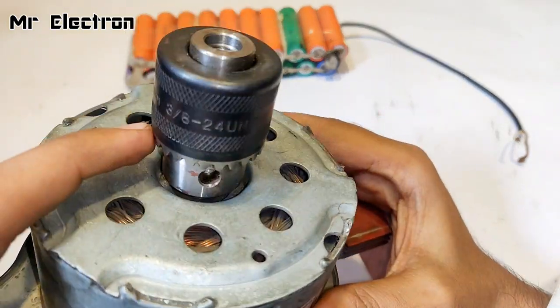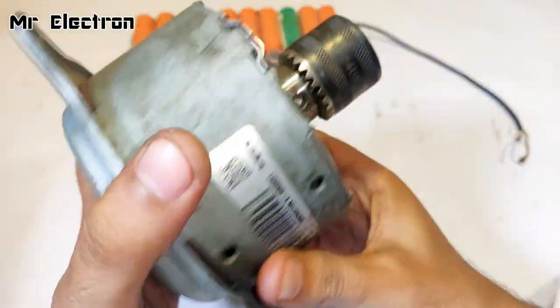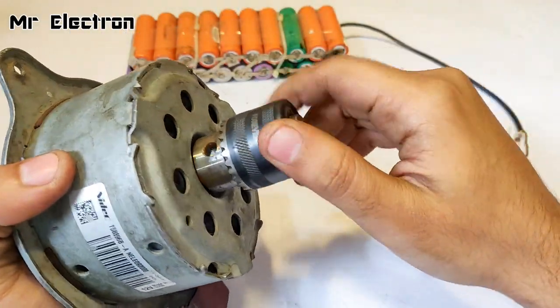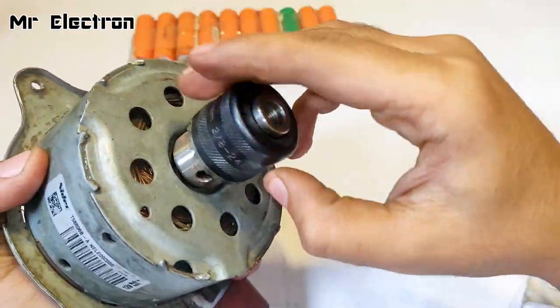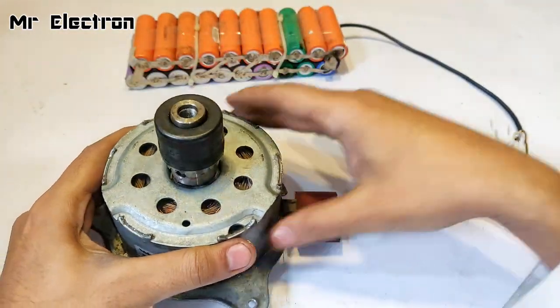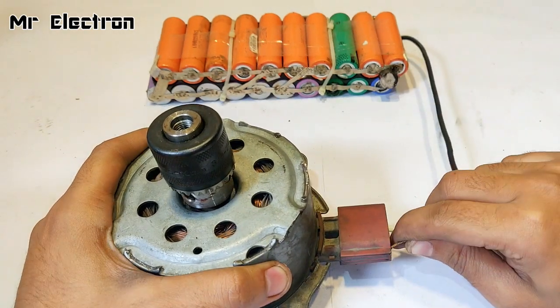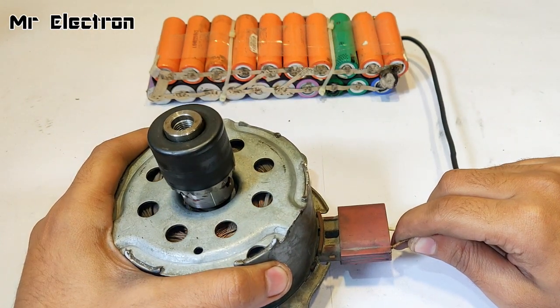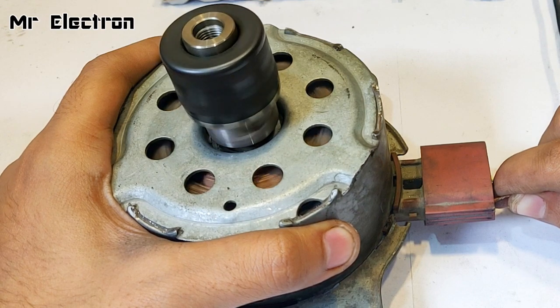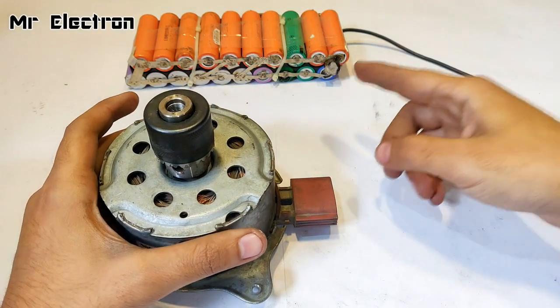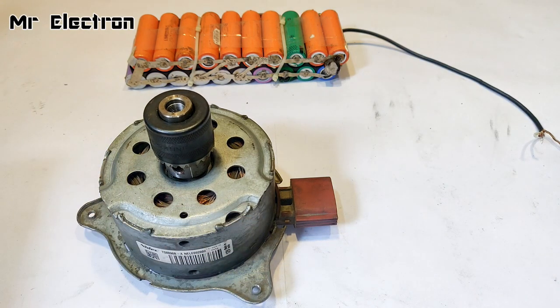Here as you can see, I have connected a drill chuck to the shaft of this motor so that the rotation of the motor is visible pretty good. Now I am going to connect the terminals of this battery to this motor and let's see how it runs. You see? It's running nicely.